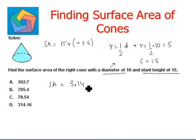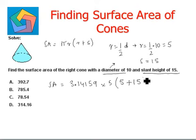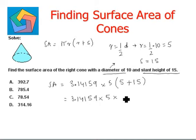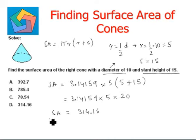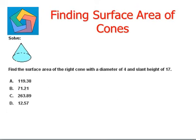Using the formula: SA = 3.14159 × r × (r + s) = 3.14159 × 5 × (5 + 15) = 3.14159 × 5 × 20. Multiplying all three numbers gives us 314.16 as the surface area of the right cone. This is the final answer and can be seen in option D.